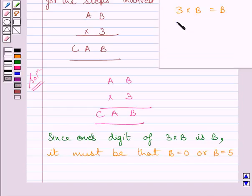You know that when value of B is 0, then the product of 3 and 0 is 0 only. Or we can say units place of 3 multiplied by 0 is 0. And when value of B is 5, then units place of 3 multiplied by 5 is 5. So, possible values of B are 0 or 5.